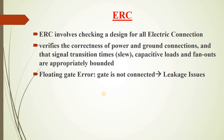Another check is ERC — electric rule check. Electric rule check involves checking a design for all electrical connections. It verifies the correctness of power and ground connections, and checks whether signal transition times, capacitive loads, and fanouts are appropriately bounded. If ERC is not satisfied, it can lead to floating gate errors — if a gate is not connected, it leads to different kinds of leakage issues.